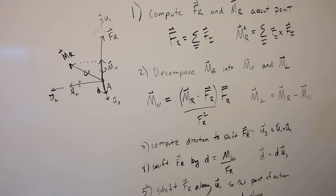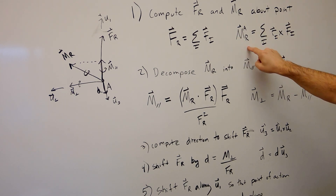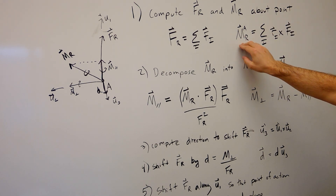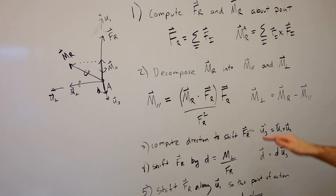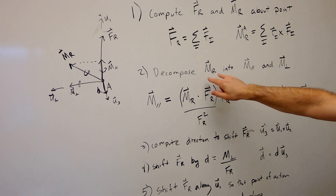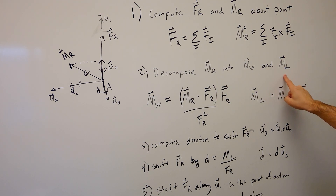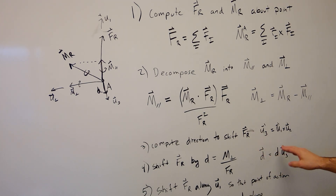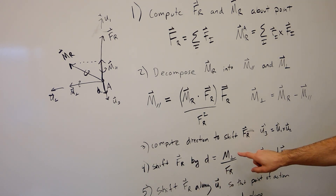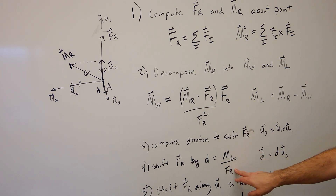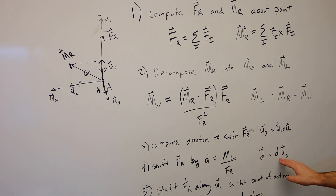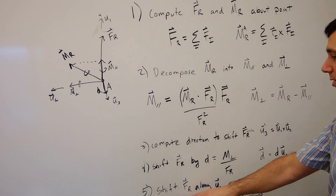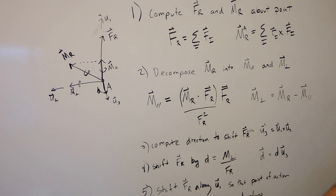To summarize the steps: sum all forces and compute the moment at an arbitrary point A (using the origin is convenient). That gives the resultant force and resultant moment. Step two: break the resultant moment into components parallel and perpendicular to the resultant force. Then compute the direction to shift FR as the cross product of the directions of FR and M_perpendicular. The shift distance is |M_perpendicular| / |FR| along direction U3. Lastly, if needed, shift FR along its own line of action to bring it onto the desired plane. Good luck with your homework.